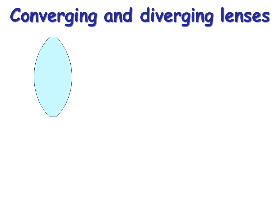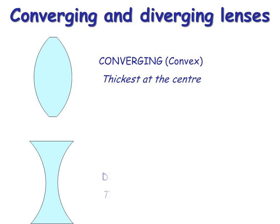Two different types of lenses. There are converging and diverging lenses. Converging lens is also known as a convex lens. And it's thickest at the center. A diverging lens is also known as a concave. And it's thinnest.